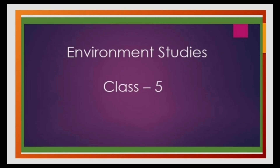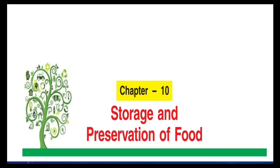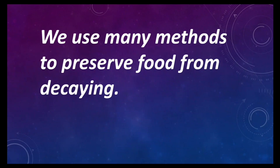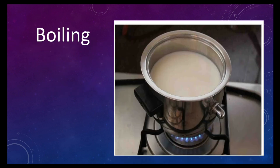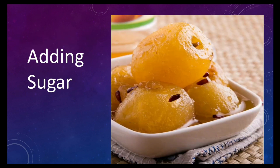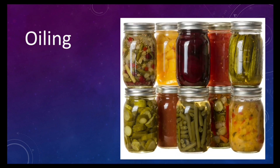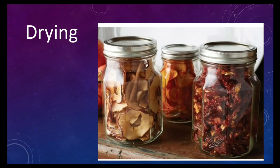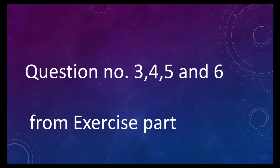Hello kids, environment studies class 5, chapter 10: storage and preservation of food. Up to now we have done that we use many methods to preserve food from decaying, such as refrigeration, boiling, adding sugar, salting, oiling, canning, drying, etc. We also did the first two questions. Today we will do question numbers three, four, five, and six from the exercise part.